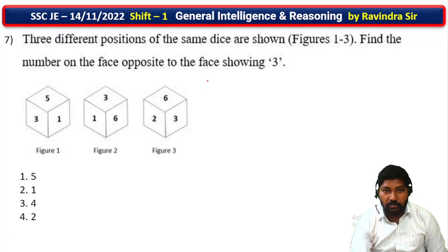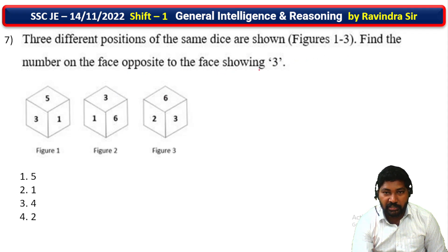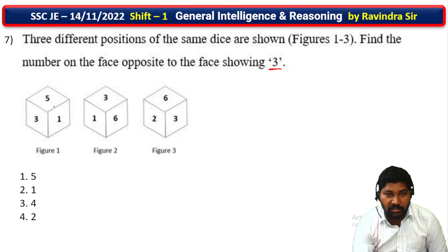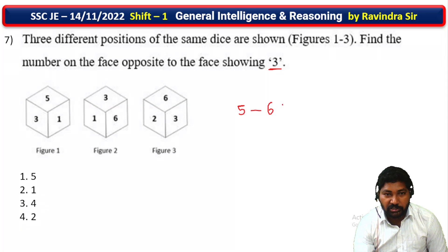Next question — the question involves three dice. Find the number on the face opposite to the face showing 3. To find the number opposite to 3, compare first and second dice, then second and third dice. If we have 1, 3, 5 and 1, 3, 6 — 1 and 3 are common. Remaining are 5 and 6: 5 is opposite to 6, and 6 is opposite to 5.